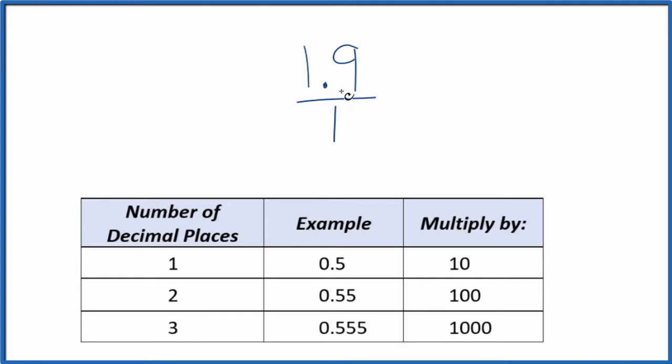If we can get this to a whole number here, that'll make it a lot easier. And we have one decimal place here. One decimal place, we're just going to multiply this by 10. So if we multiply 10 times 1.9, we end up with 19. And that's the whole number we're looking for.